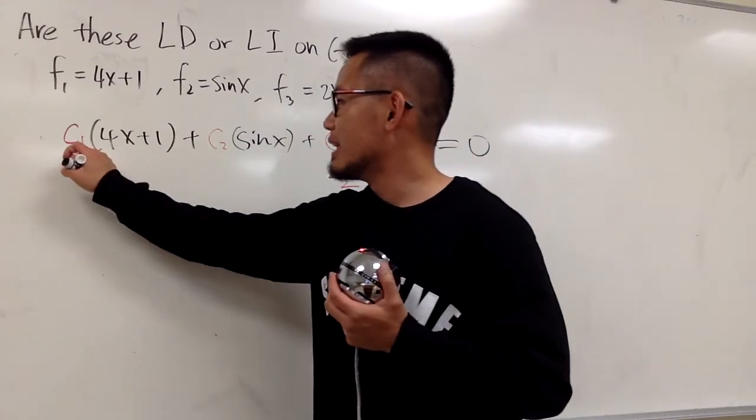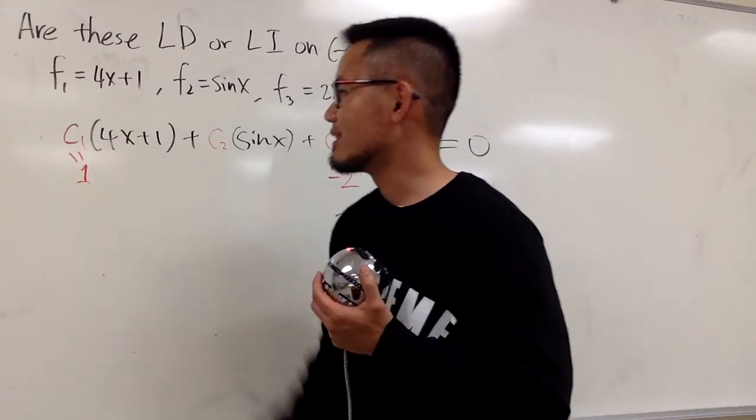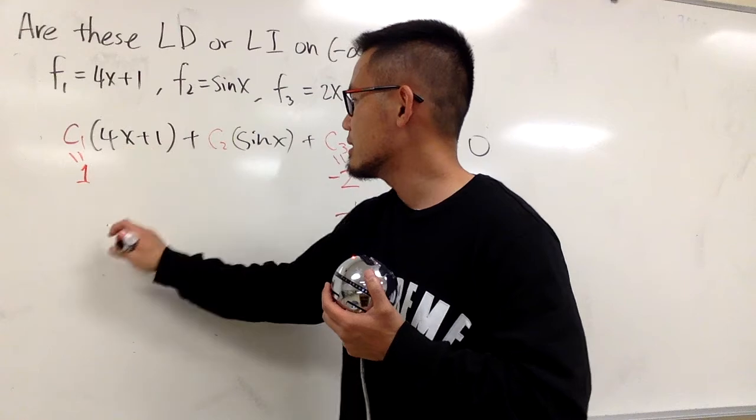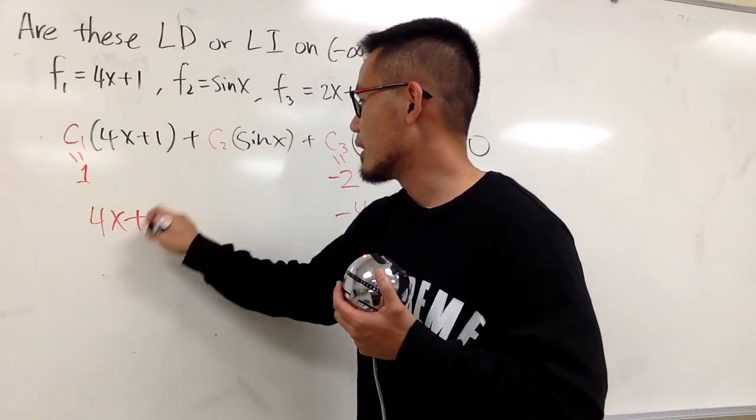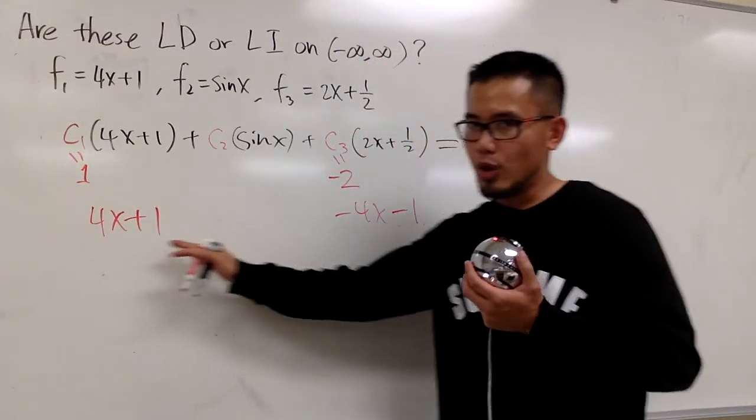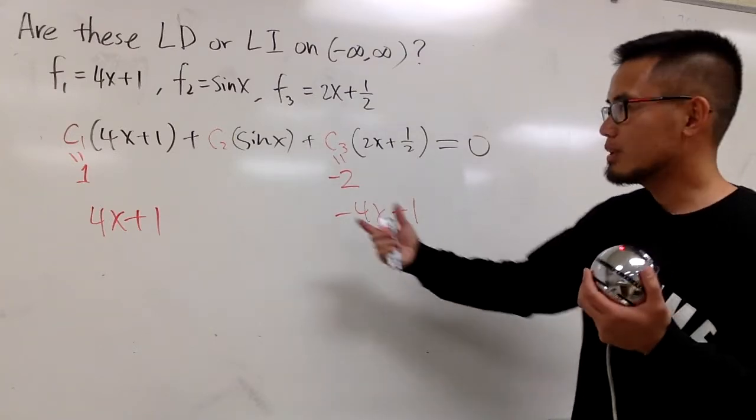And now, I can just go ahead and make c1 equal to plus 1. Because plus 1 times this is 4x, and then 1 times that is plus 1. And you'll see, they will all cancel out. But what happened to the middle term?